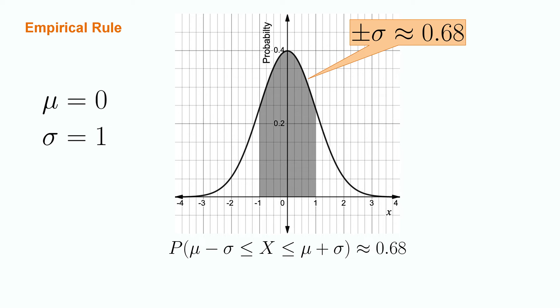Using the standard normal distribution shown above, the likelihood of observing an outcome from within a standard deviation of the mean, which we write as mu minus sigma less than or equal to x less than or equal to mu plus sigma, is roughly equal to 0.60.